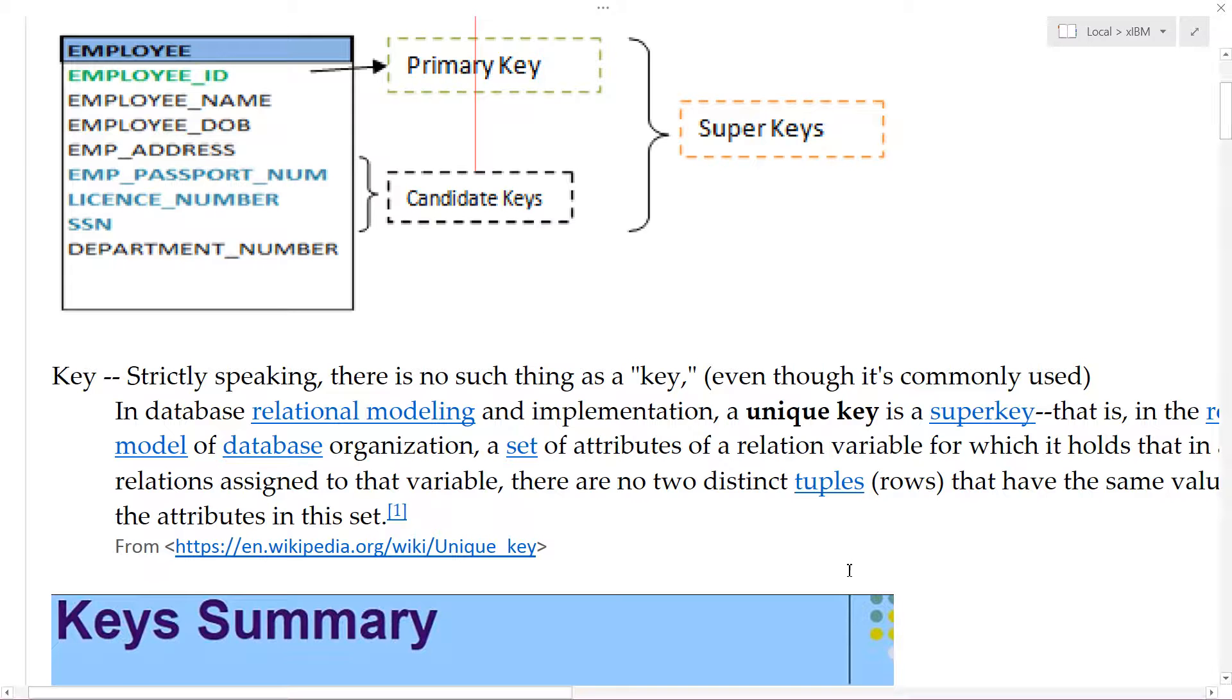If you take your employee table, each of these are columns, of course, also called fields. If any single column can uniquely identify the row, and that row is called a tuple, then it becomes what's called a candidate key. And among your candidate keys, you can choose one of them, and that is called the primary key.